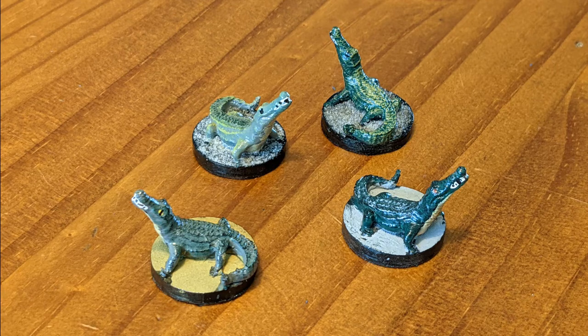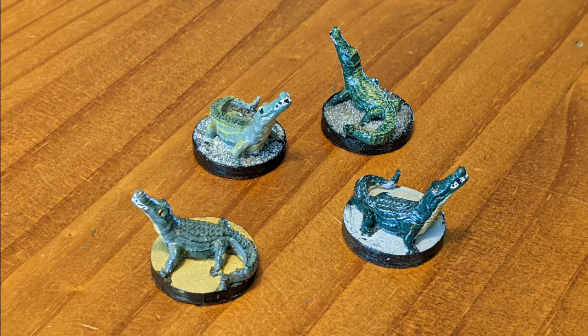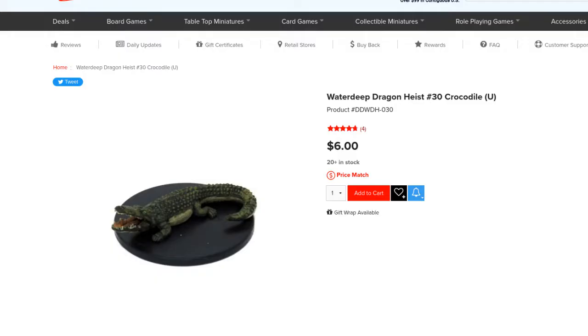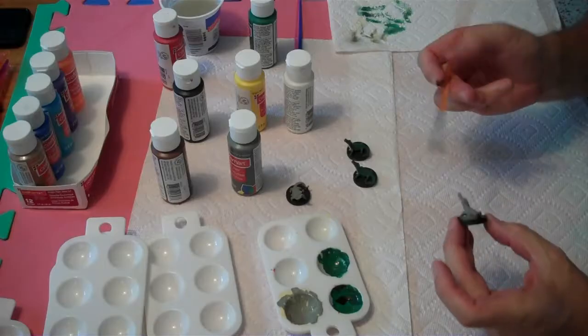If you are playing a druid who can cast conjure animals, you might want some crocodile miniatures. Commercially, four of these will cost you around $32, so I decided to make my own and try out figure painting.